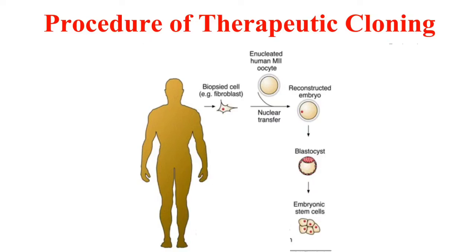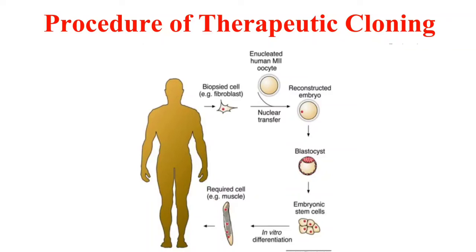When the embryo is at the blastocyst stage, it is used to extract stem cells from the blastocyst, and then these cells are grown under special conditions to get the cells for therapeutic uses.